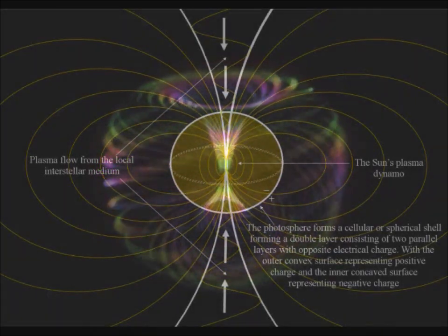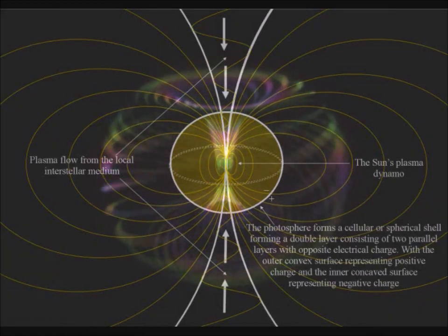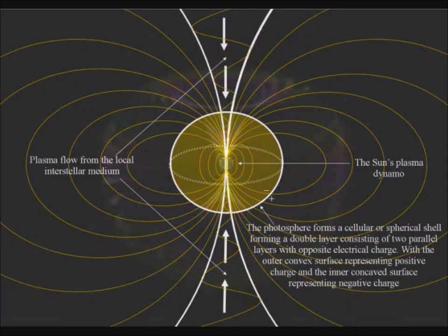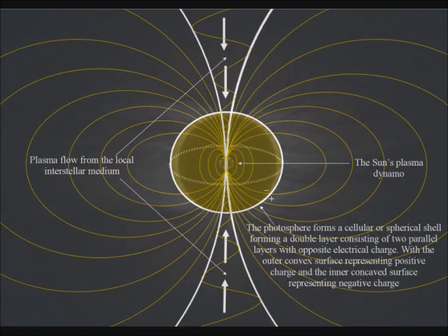Neutral particles from the local environment become ionized, spiraling down forming an electric current in the plasma flow. This will power the plasma dynamo and will act like a superconducting coil producing the star's magnetic field.